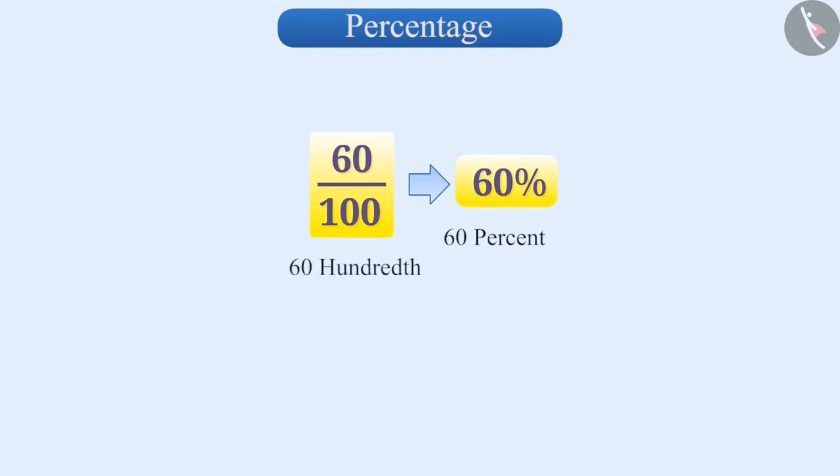But 60 by 100 is also read as 60 hundredths. Meaning of hundredths is out of a hundred. If we use the word hundredths or percentage, it means per 100 or out of a hundred. In this way, 60 hundredths or 60% means 60 out of a hundred.